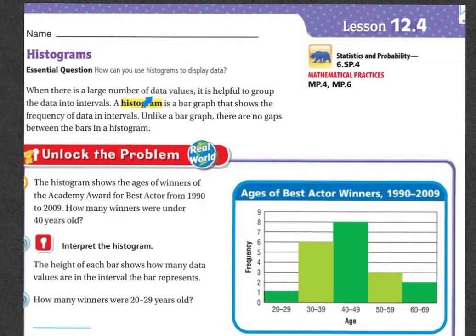When there is a large number of data values, it is helpful to group the data into intervals. A histogram is a bar graph that shows frequency of data in intervals. Unlike a bar graph, there are no gaps between the bars in a histogram.